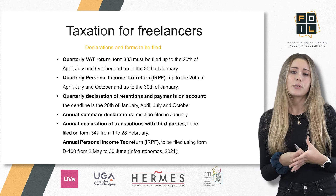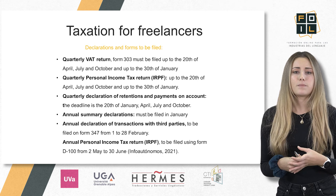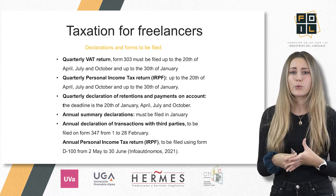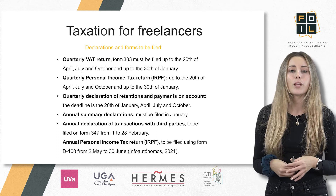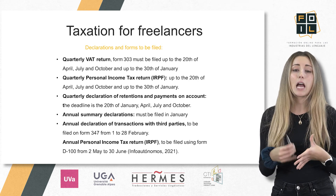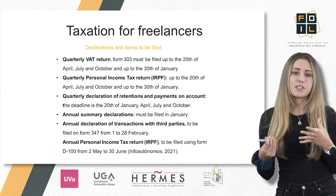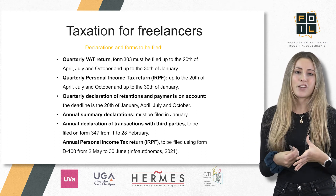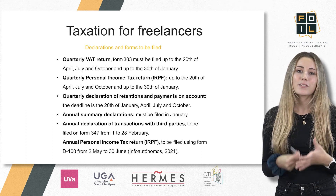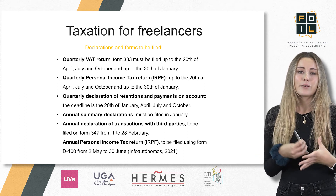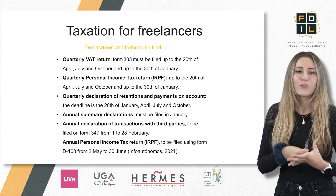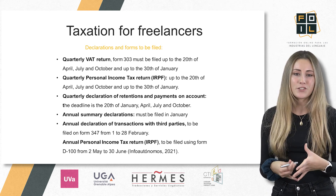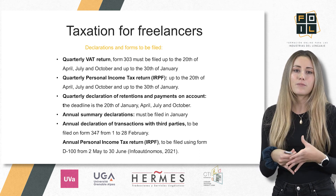The following declarations and forms must be filed by freelancers. The quarterly VAT return Form 303 must be filed up to the 20th of April, July and October, and up to the 30th of January. The quarterly declaration of retention and payments on account is due by the 20th of January, April, July and October. The annual summary declaration must be filed in January. The annual declaration of transactions with third parties must be filed on Form 347 from 1st to 28th of February. And the annual personal income tax return IRPF is to be filed using Form D-100 from 2 May to 30 June.